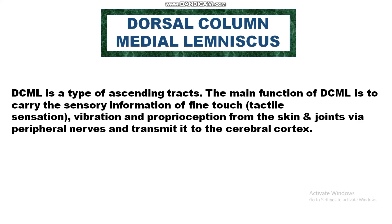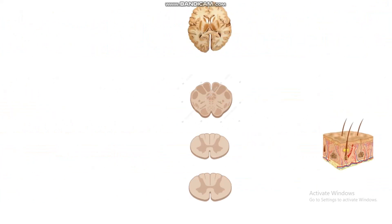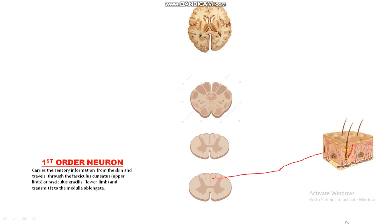The dorsal column medial lemniscus pathway comprises three neurons: a first-order neuron, a second-order neuron, and a third-order neuron. The first-order neuron senses and detects sensory information of fine touch, vibration, and proprioception from the skin or joints, and transmits it to the second-order neuron. The first-order neuron carries this sensory information from the skin and travels through the fasciculus cuneatus or fasciculus gracilis.